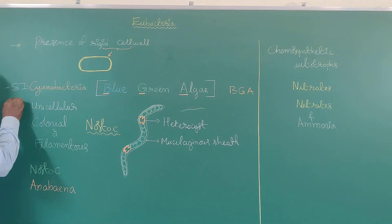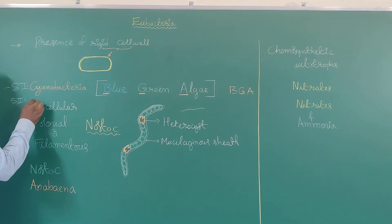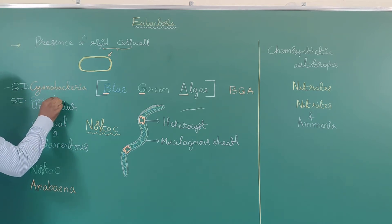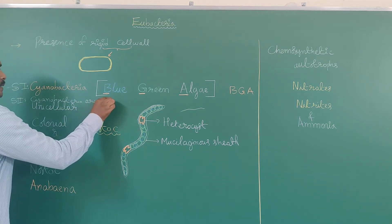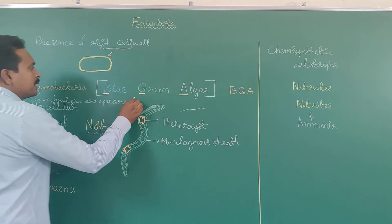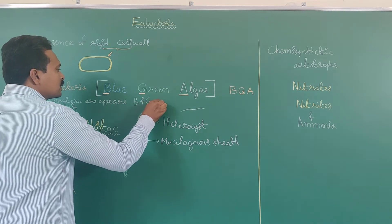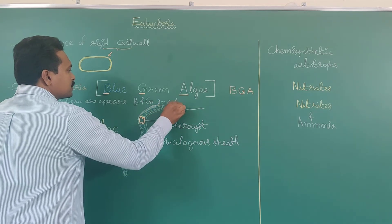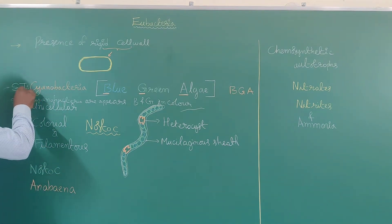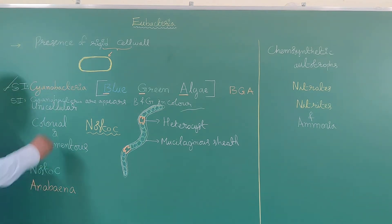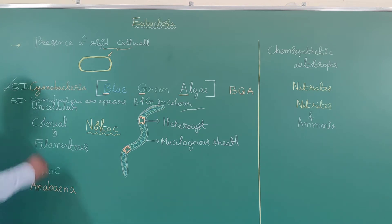Statement 2: Cyanobacteria appear blue-green in color. Statement 1 — cyanobacteria are referred to as blue-green algae — is a correct statement. Statement 2 — cyanobacteria appear blue-green in color — is also correct. So both statements are correct.